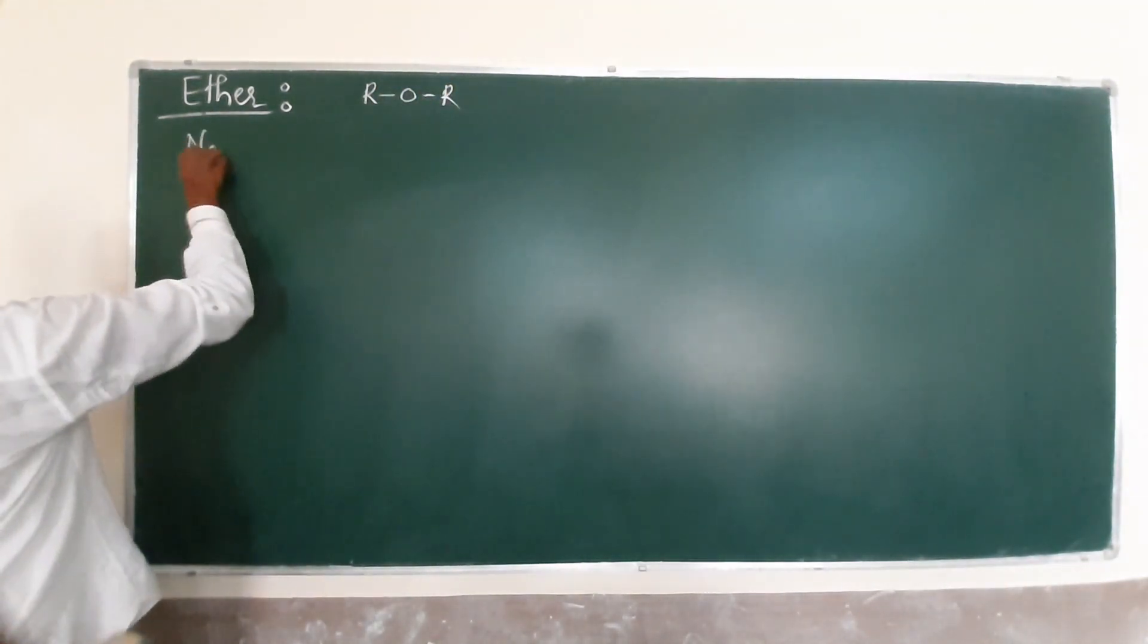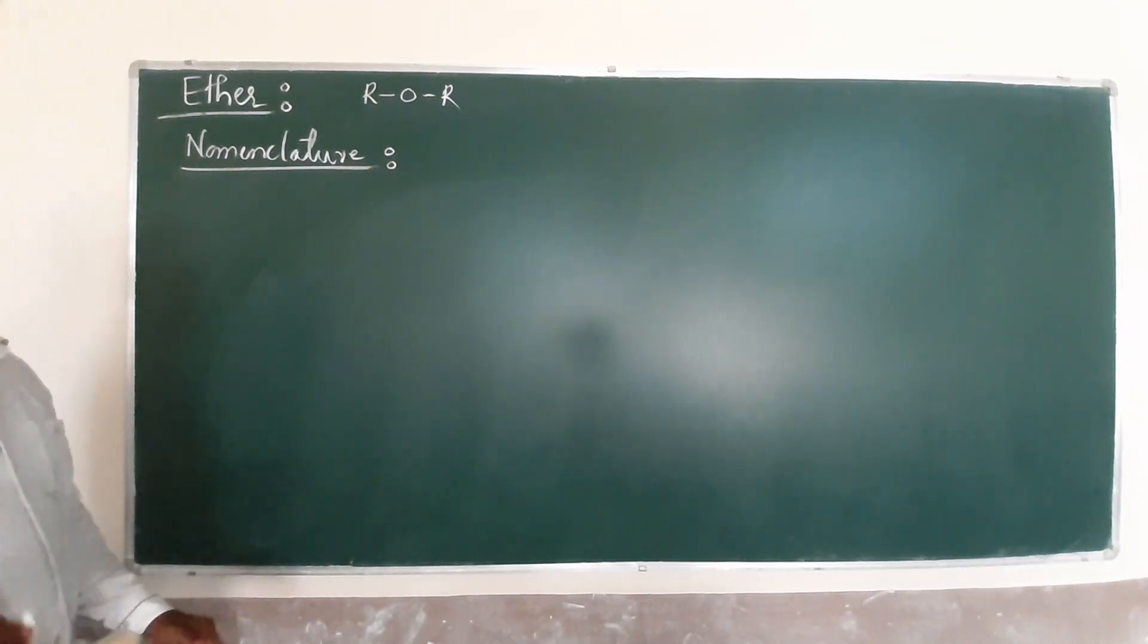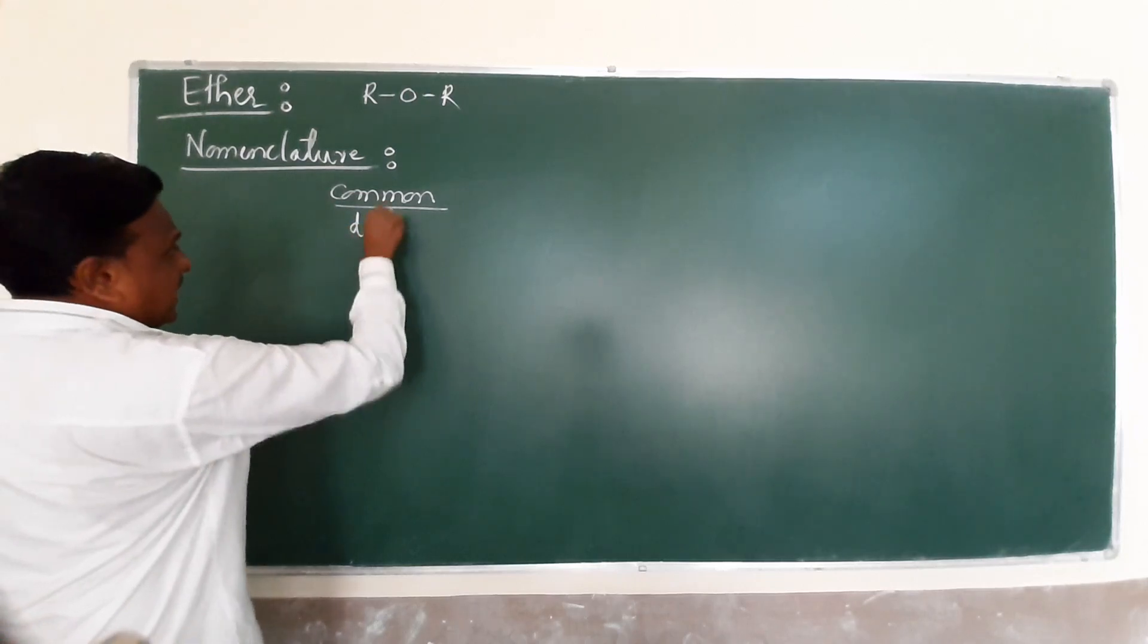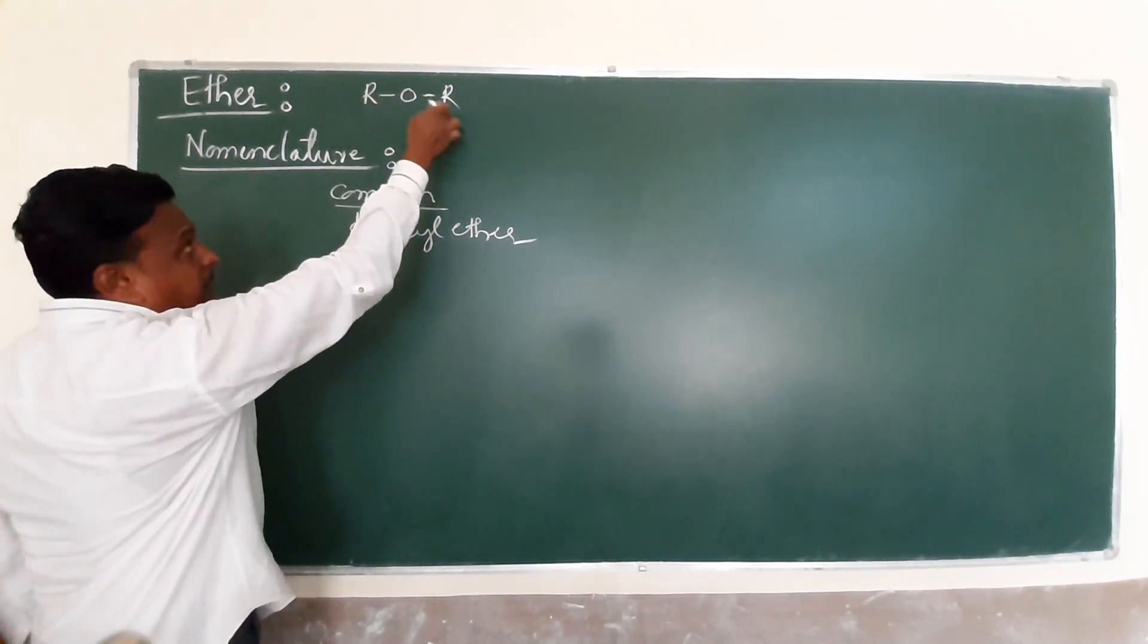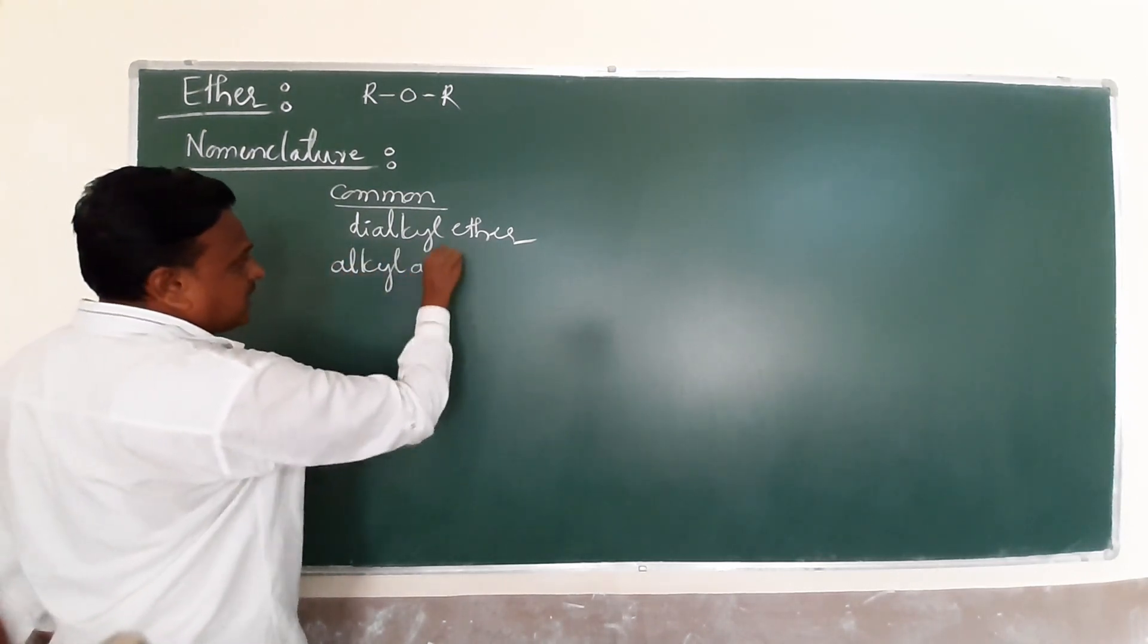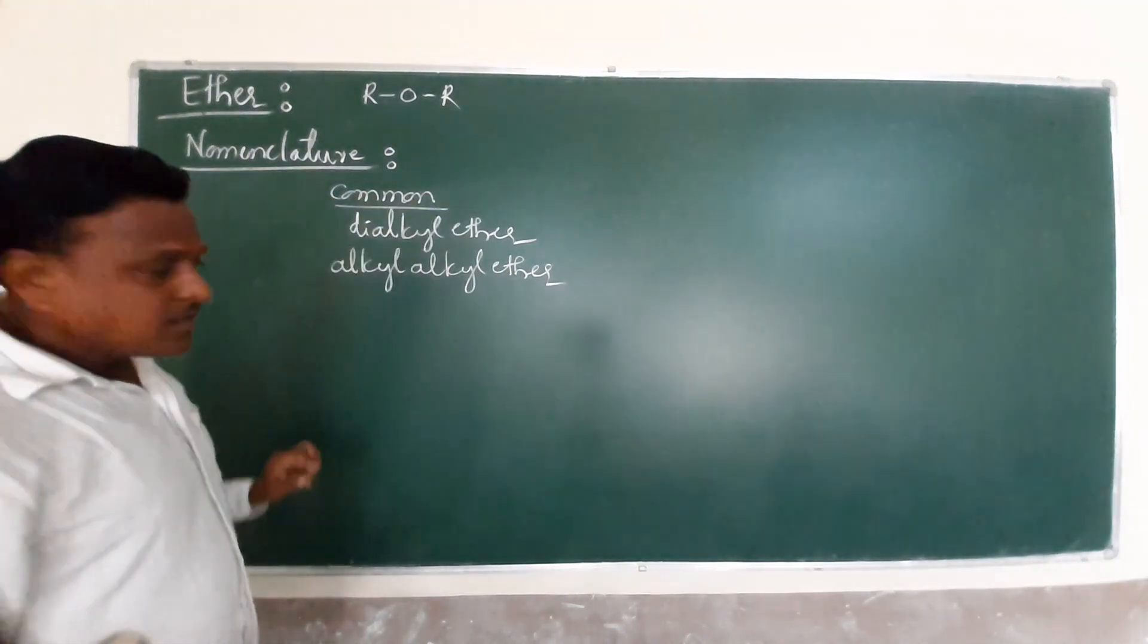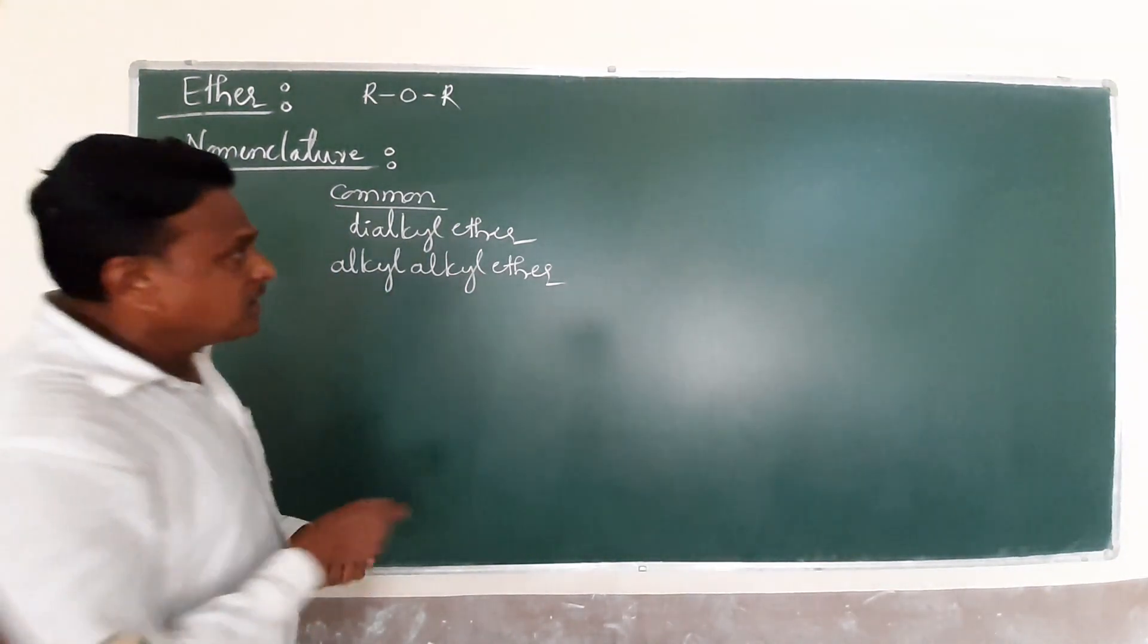This is the nomenclature part. In the common system, ethers are commonly called dialkyl ether. When both alkyl groups are the same, it's simple or symmetric. If you have asymmetric, you pronounce based on the alphabet - alkyl, alkyl ether.